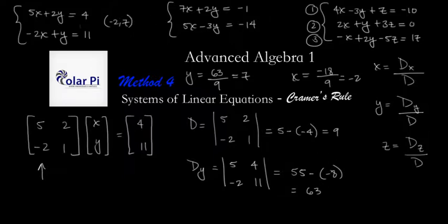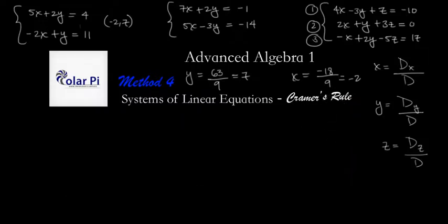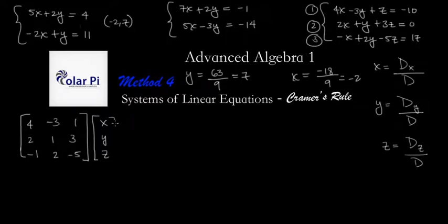For the 3x3 case, you will have to know how to do the determinant of a 3x3 matrix. If you do know that, then this is pretty straightforward. I won't go through the whole process, but I'll write everything you need to get started. Our coefficient matrix is 4, negative 3, 1, 1, 1, 3, 2, 1, negative 5 times x, y, z equals negative 10, 0, and then 17.